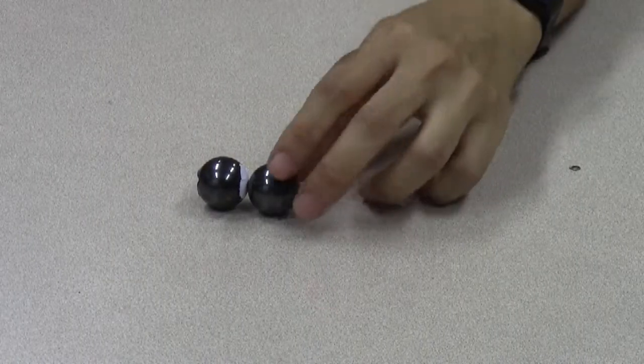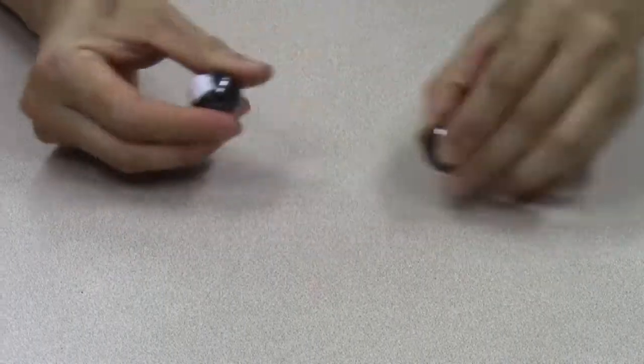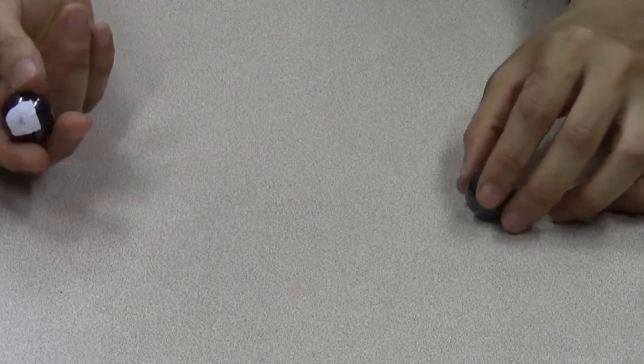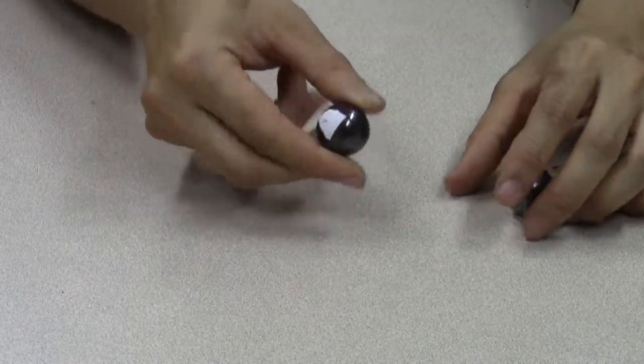How do you find which of these two poles, which are labeled with bits of paper, which of them is north and which is south?